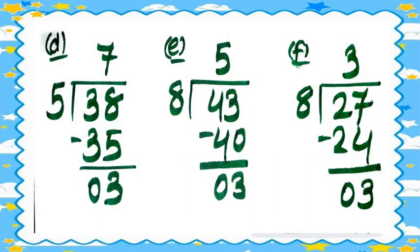Question 3f: 27 divided by 8. In the table of 8: eight ones are 8, eight twos are 16, eight threes are 24, eight fours are 32. Since 32 crosses 27, we take eight threes are 24. So 27 minus 24 equals 3. The quotient is 3 and the remainder is 3.